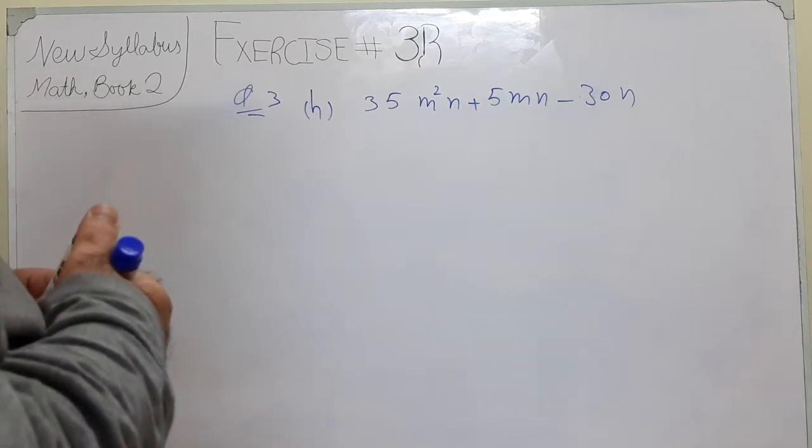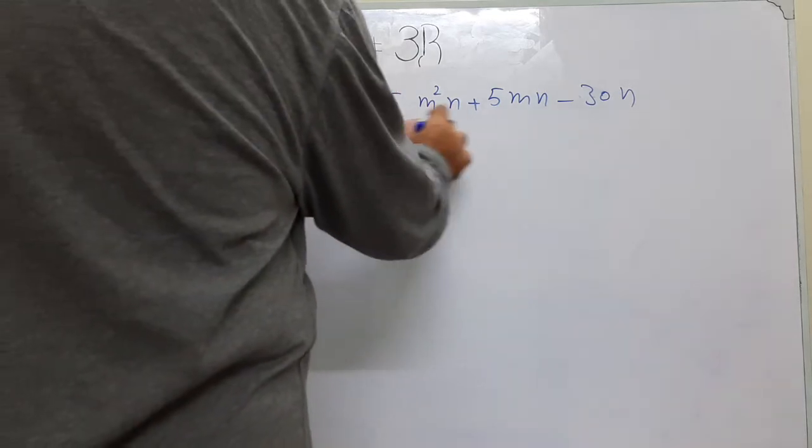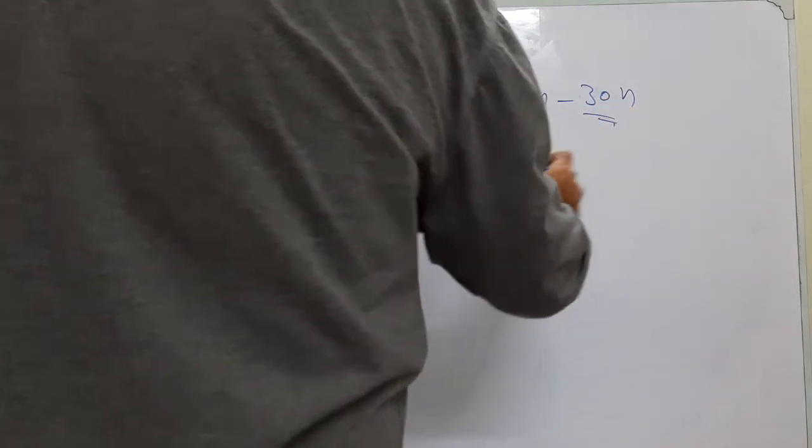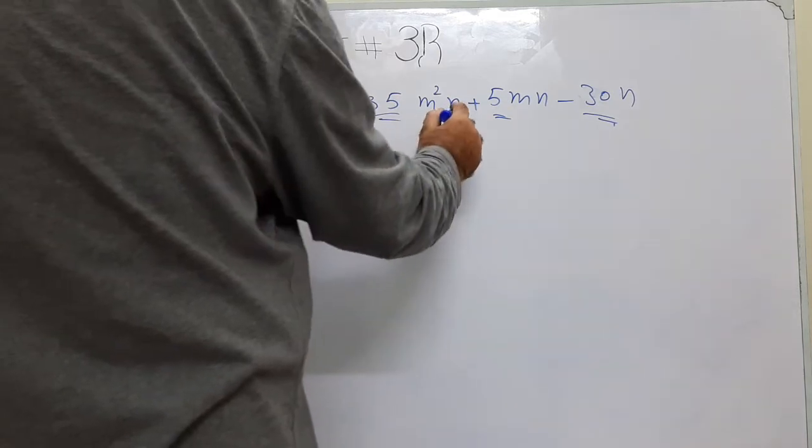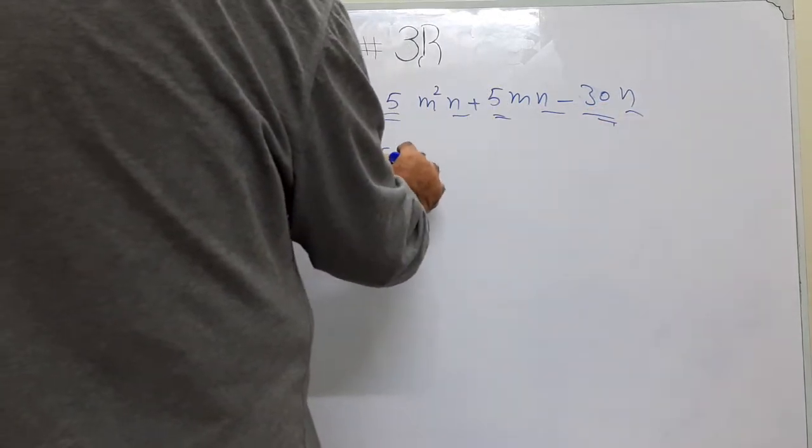Now we'll be doing question number 3 part H. We'll factorize. So here we can see that 35, 5, 30. We can take and also this is N, N, N. So we can take 5N as a common.